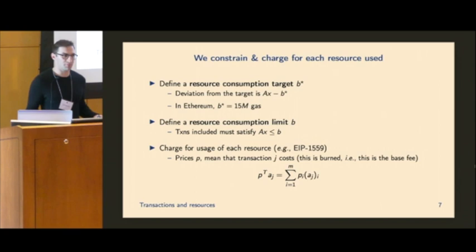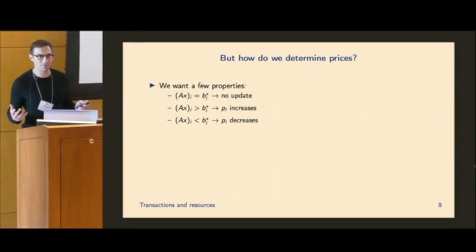Now we want to charge for every single resource that we consume. So we just introduce a price vector. And so P is going to have a length of the number of different resources there are. And then each transaction, the cost is just simply the dot product of P and the vector AJ, which is the resource usage of that particular transaction. Okay. So we set this up. And the big question here is like, how do we actually determine P? How do we determine these prices for each resource?